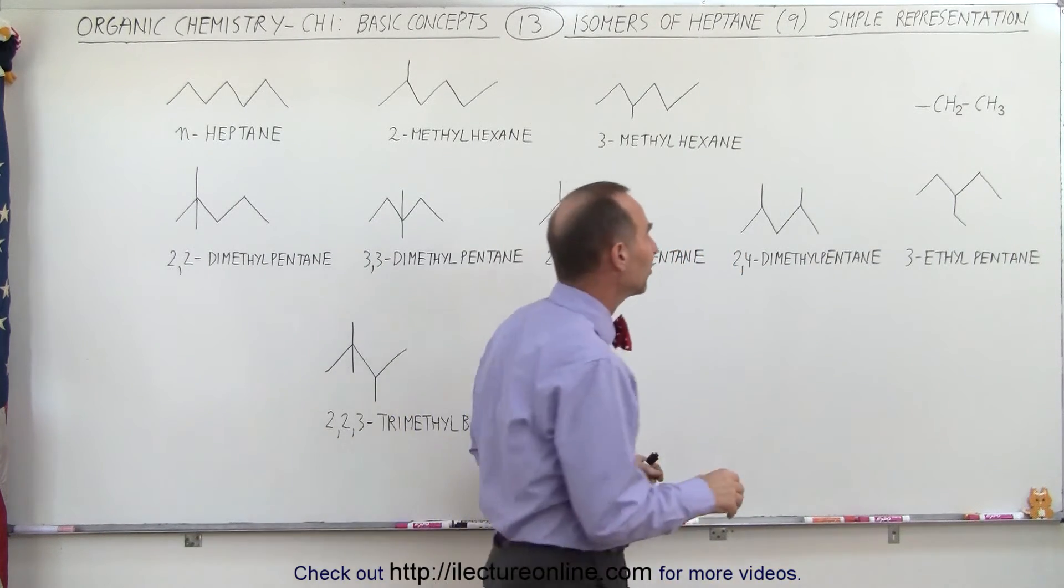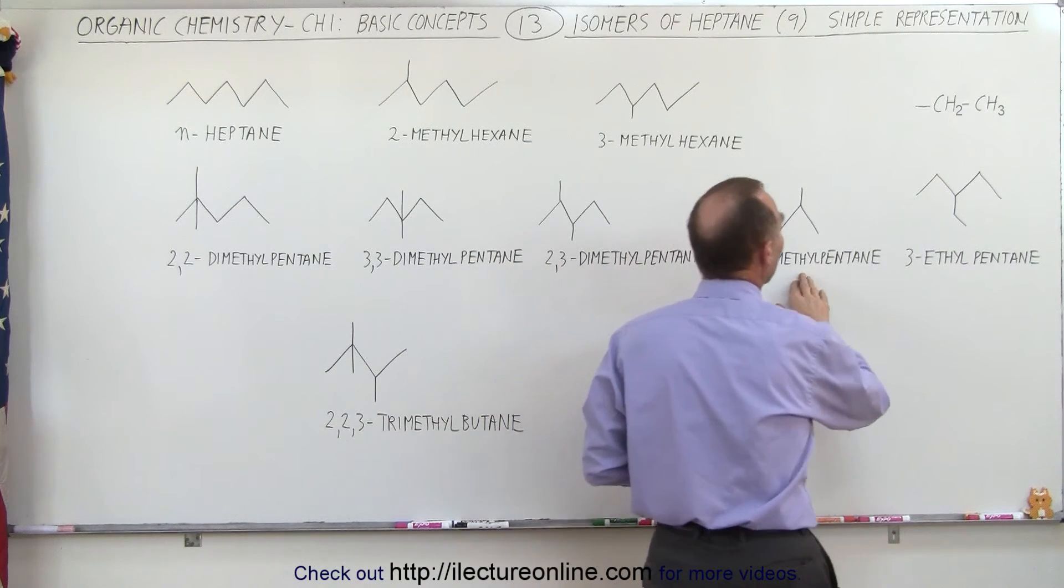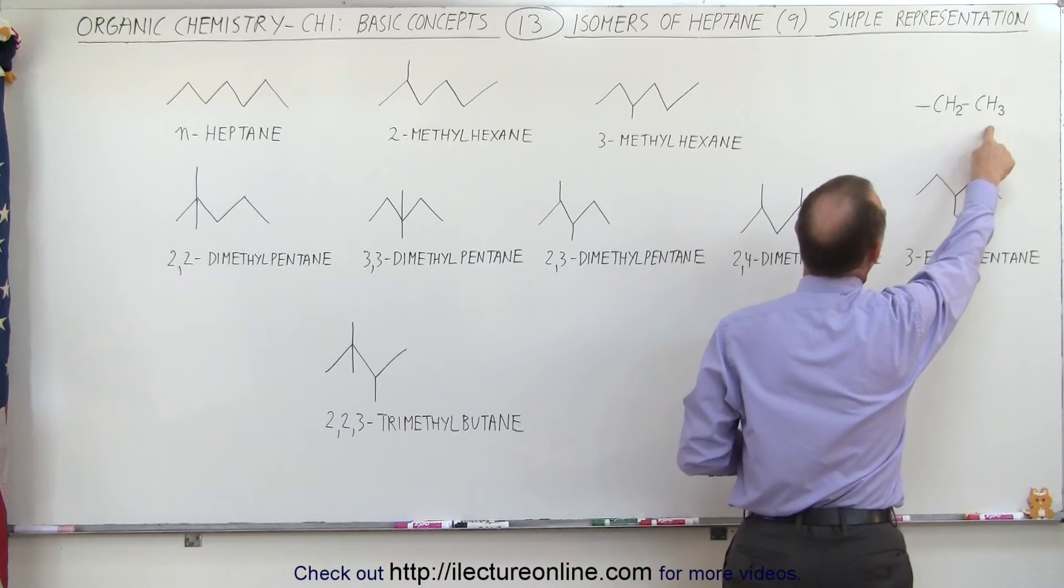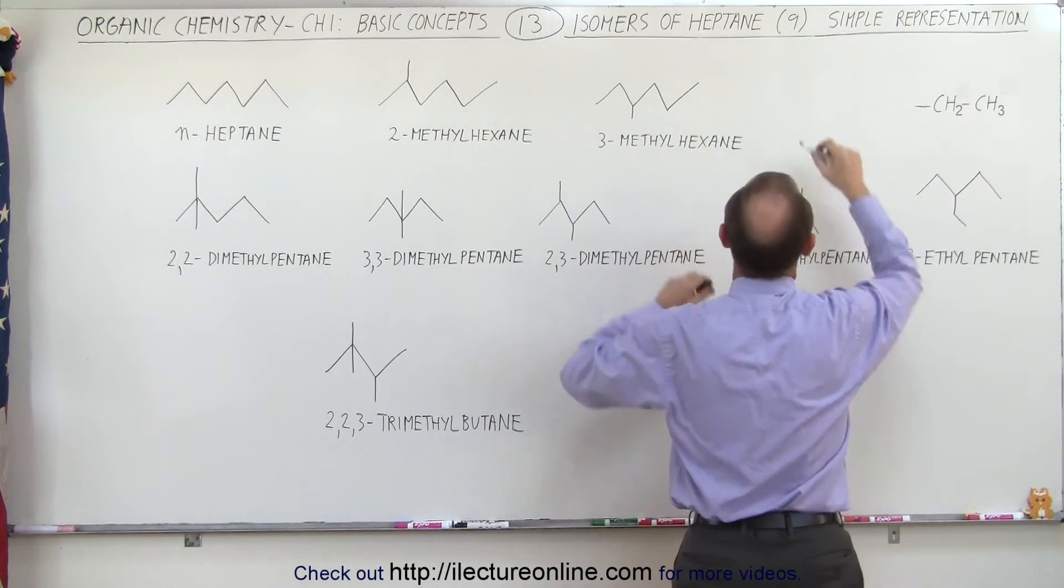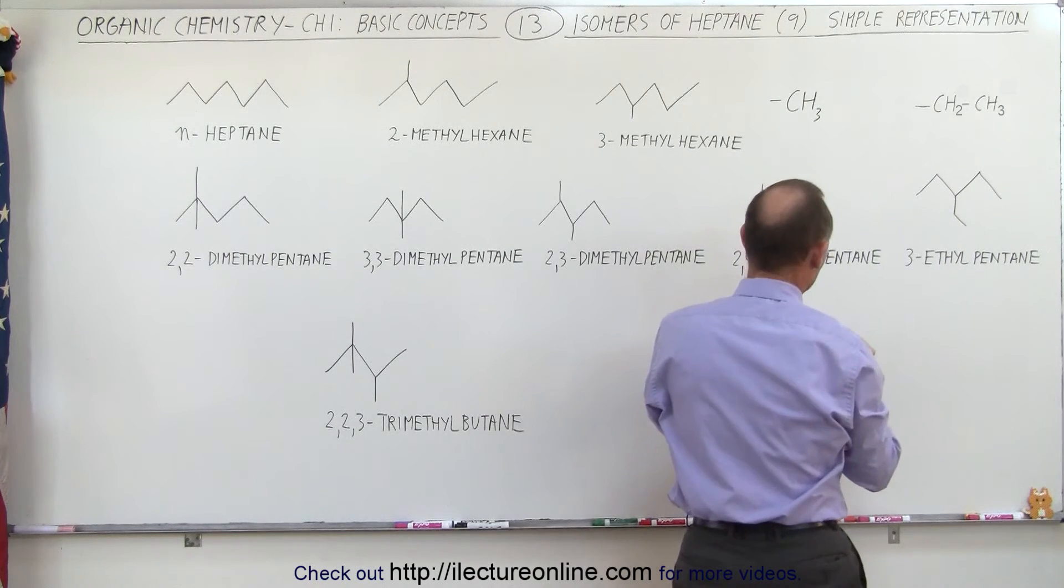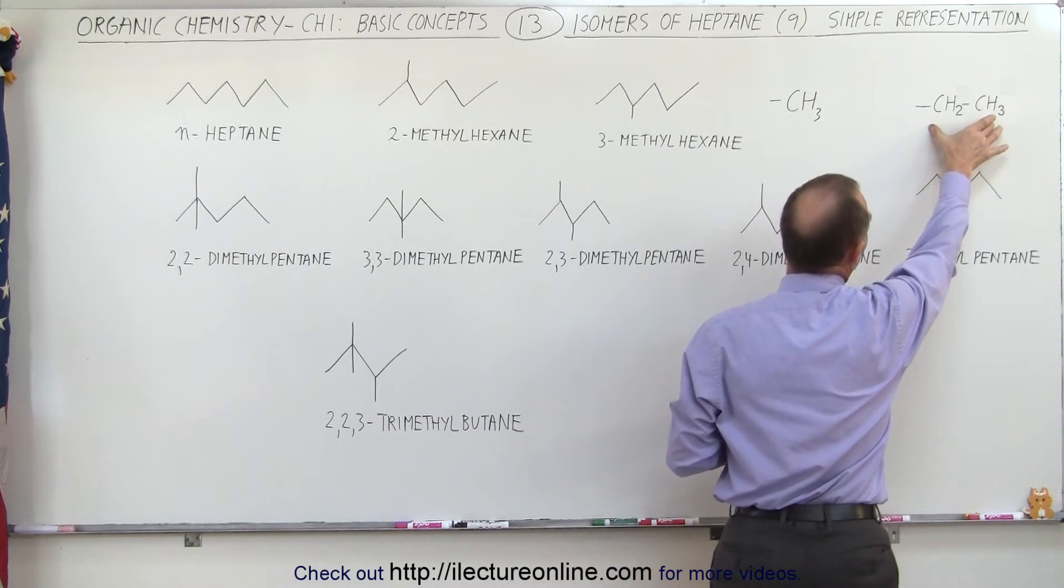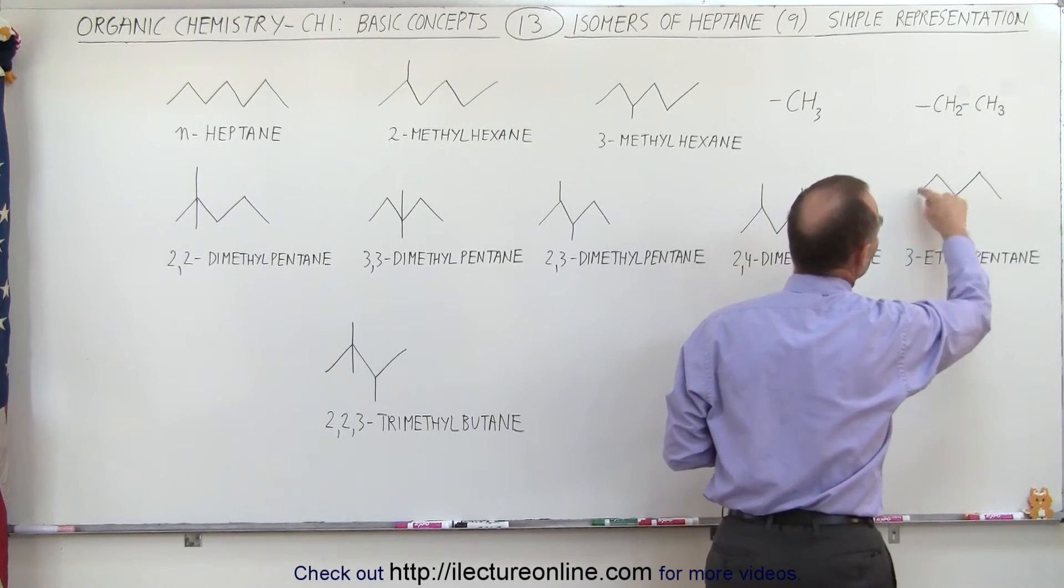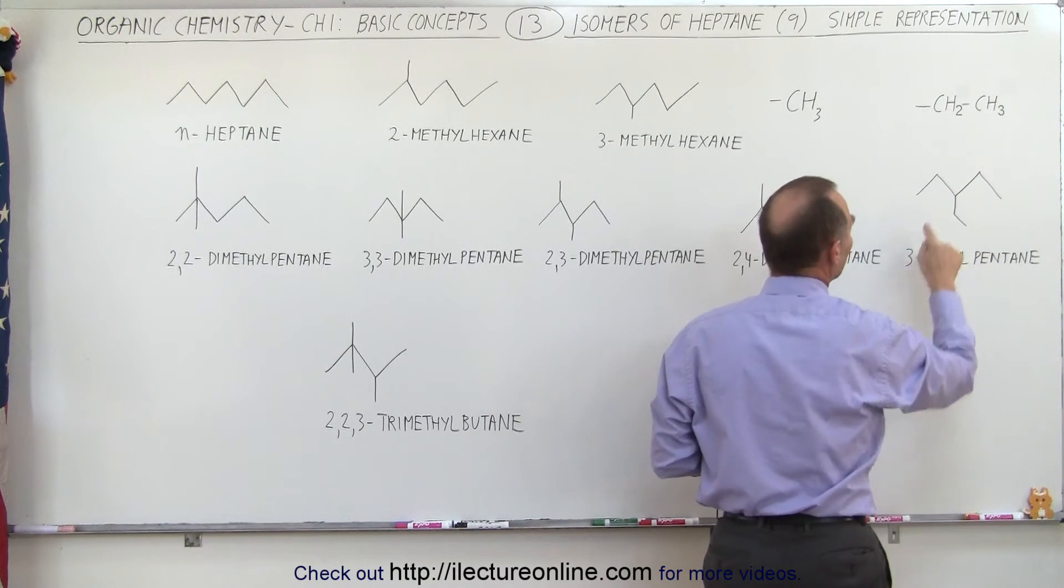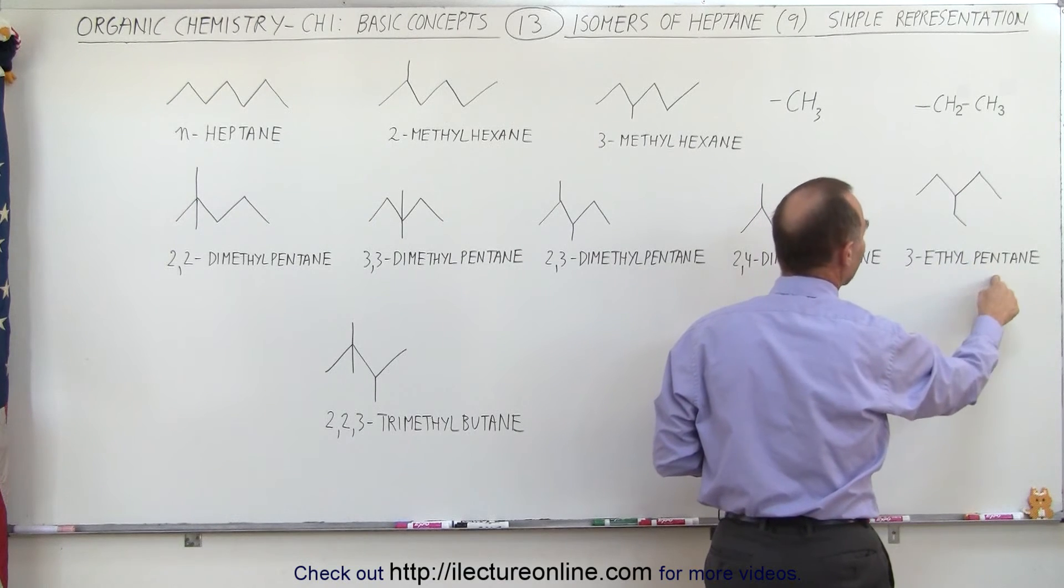Or we can have a different group. Instead of having a methyl group, we can have an ethyl group, which is a CH2CH3 group, instead of the methyl group, which is simply a CH3 group. So we can actually have a combination like this connected to a pentane string, or a string of five carbons. We place it here, then we call it three ethylpentane.